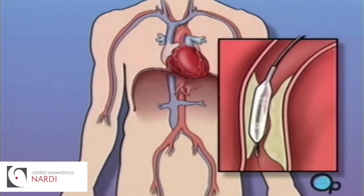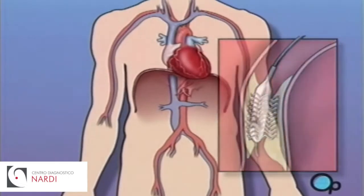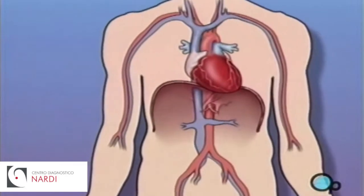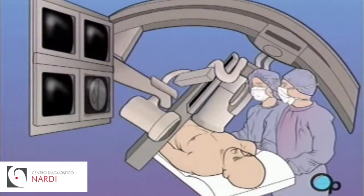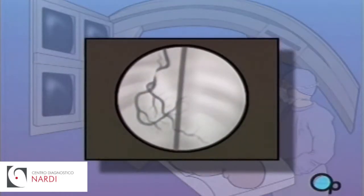A short length of mesh tubing called a stent is then inserted into the newly widened artery. During and after the procedure, your doctor will take x-rays in order to monitor your progress.